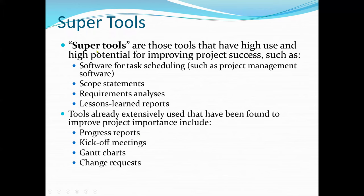Super tools are those with high use and high potential for improving project success, such as software for task scheduling — for example Microsoft Project, which includes Gantt charts, critical path analysis, and network diagrams. We also have scope statement and requirement analysis, which is very important in IT projects, covering both functional and non-functional requirements. Tools extensively used that have been found to improve project performance include progress reports, kickoff meetings, Gantt charts, and change requests.